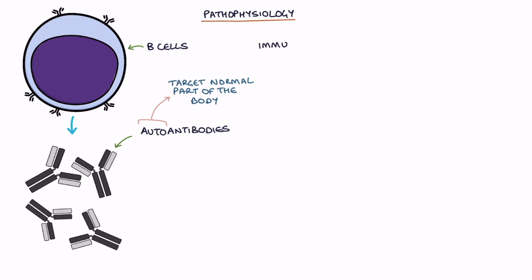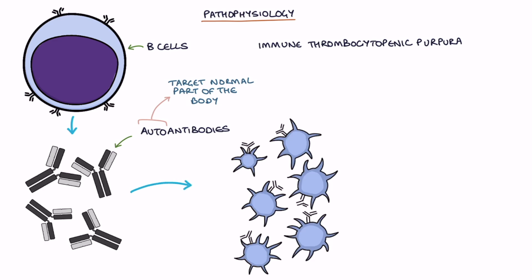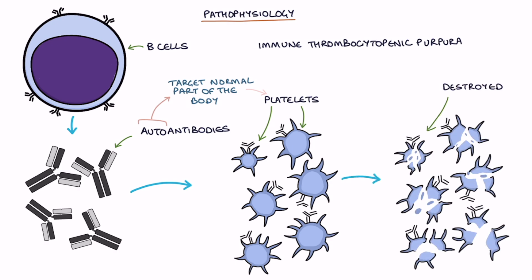In immune thrombocytopenic purpura, auto-antibodies target platelets. These antibodies attach to the platelets in the blood and result in them being destroyed. This leads to a low platelet count or thrombocytopenia.